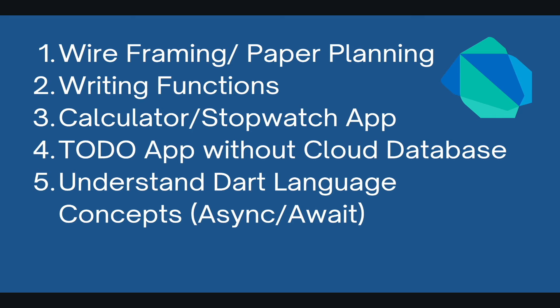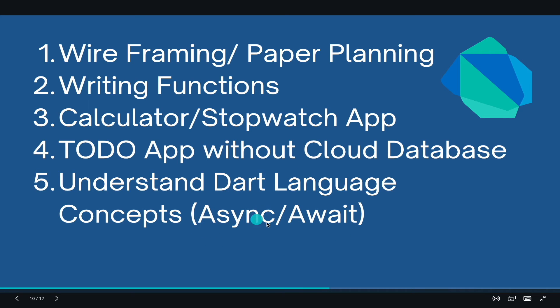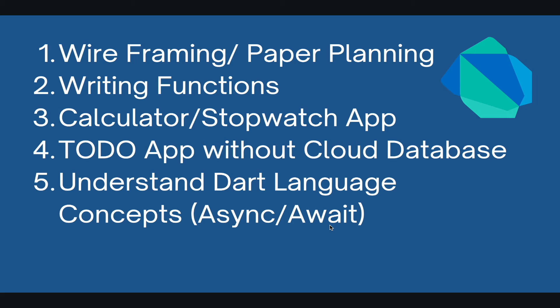In month two, you need to connect screens — for example, a to-do app might have three screens: splash screen, home screen, and an add-to-do screen. The five things to cover in month two are: wireframing, paper planning, writing functions, building a calculator and stopwatch app, and a to-do app without a cloud database (just store to-dos in a list or dictionary). Also learn Dart language concepts like async and await, which you use wherever there's a delay in your function.